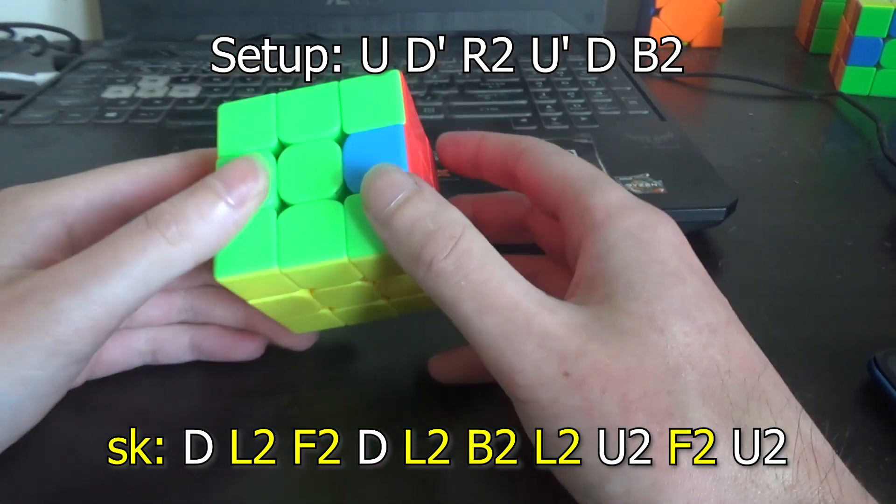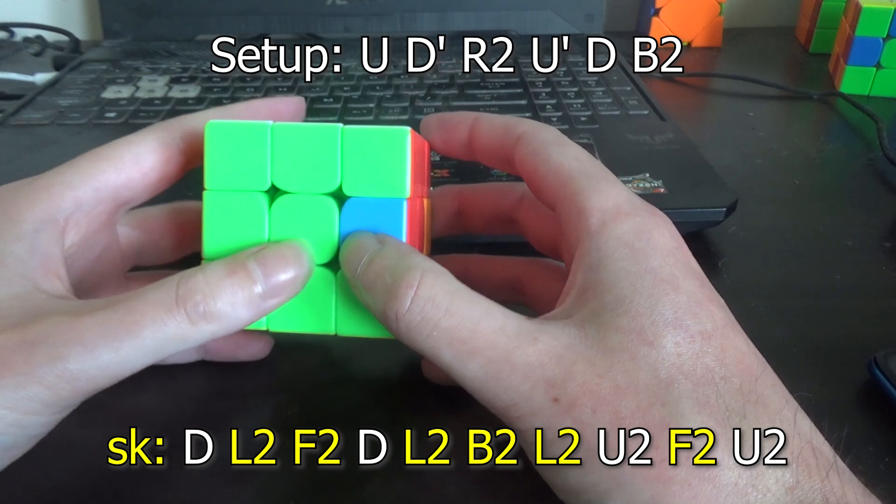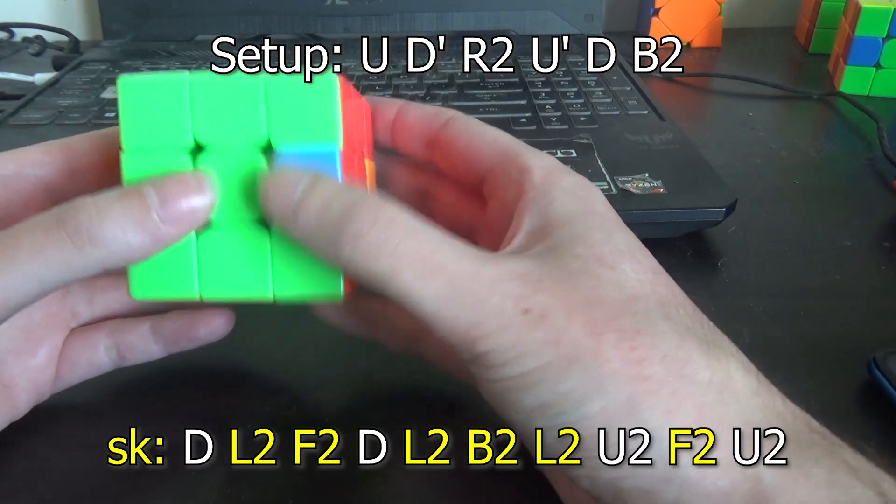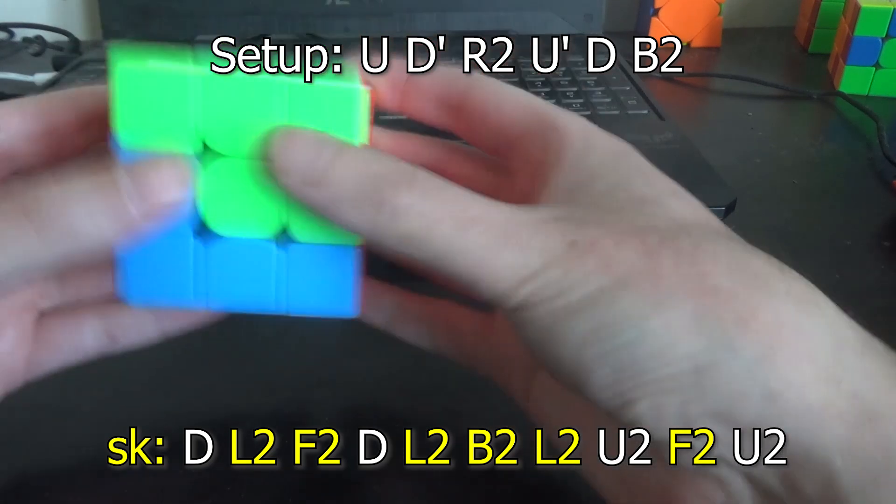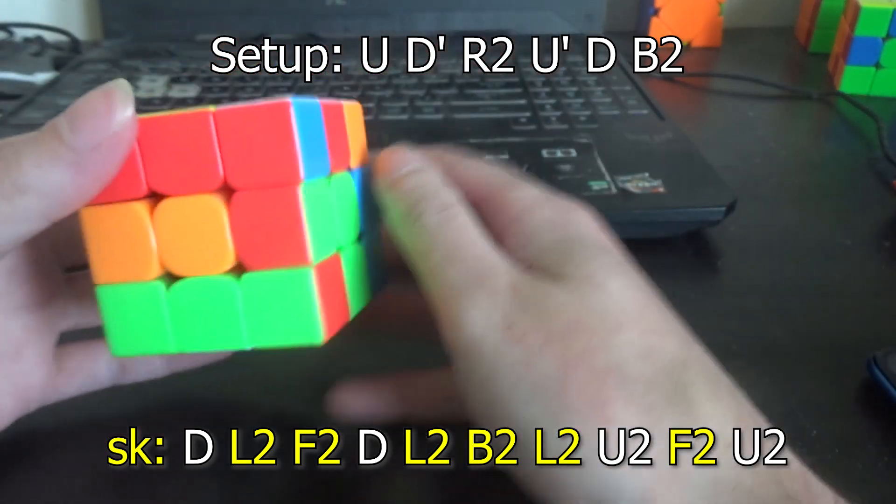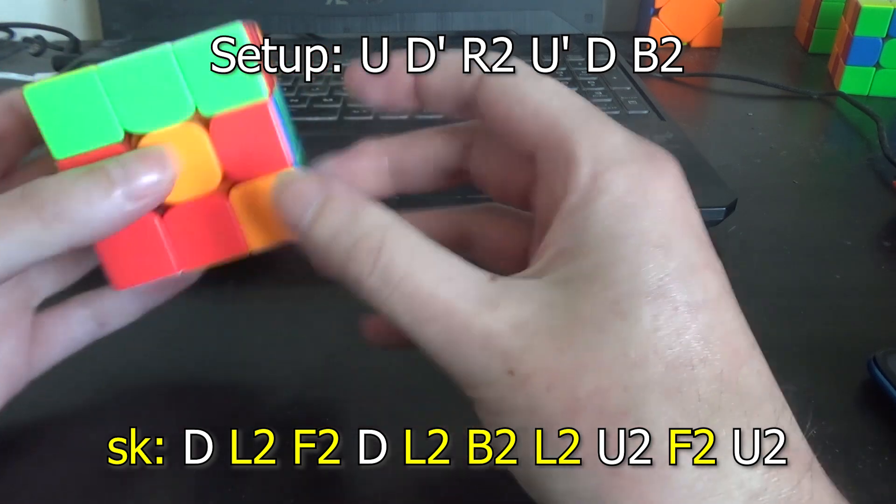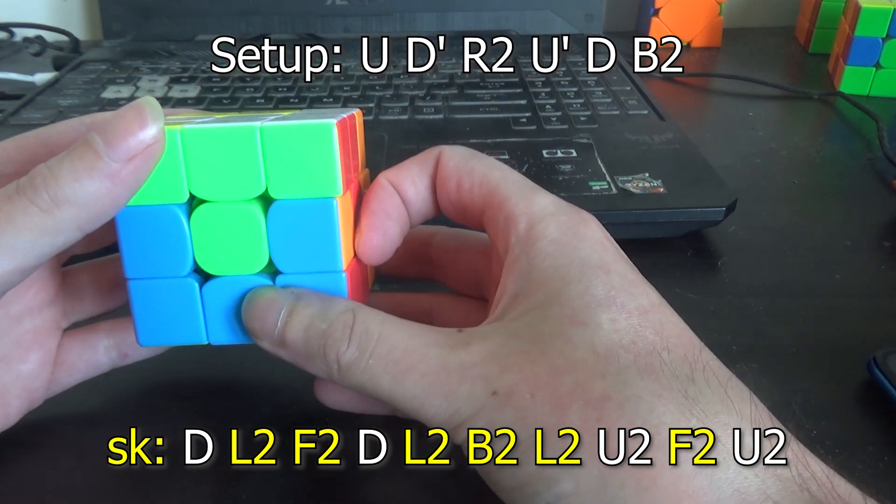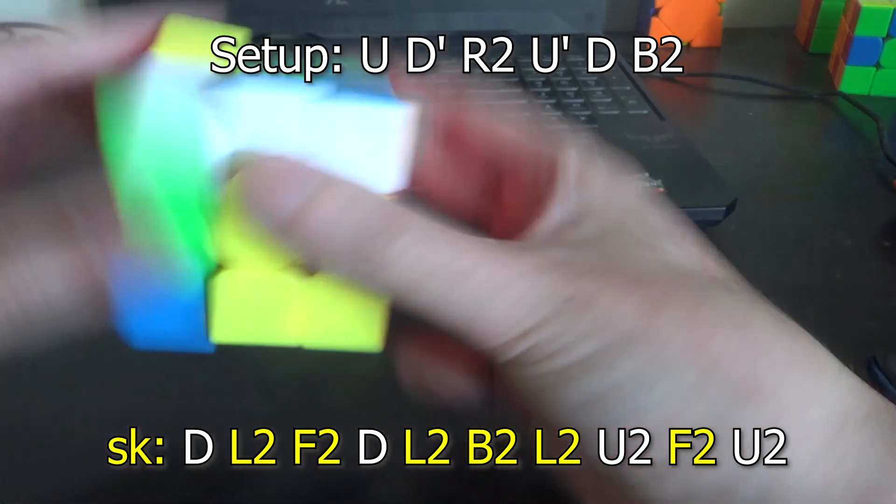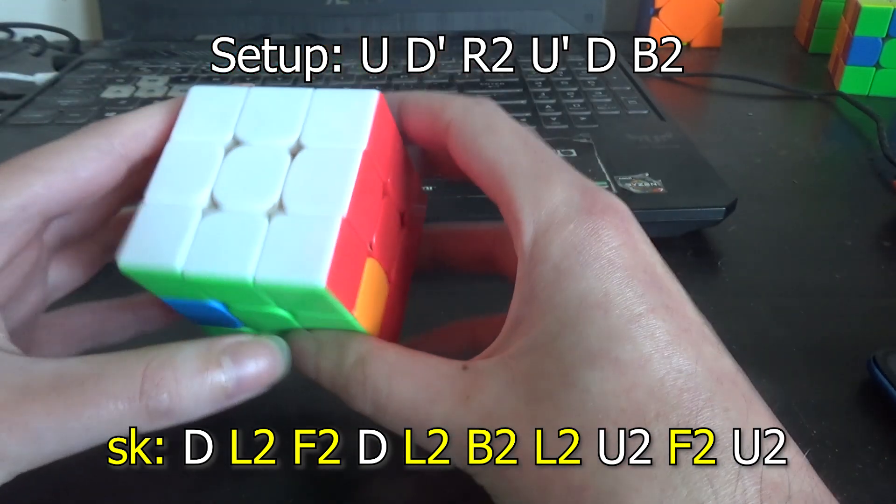So I'm going to reset the skeleton and start looking for some plus one slice insertions. We're just going to start from the first D move. Widen the first D. And then we're going to insert an E prime after this D to cancel one move. And that does not work.